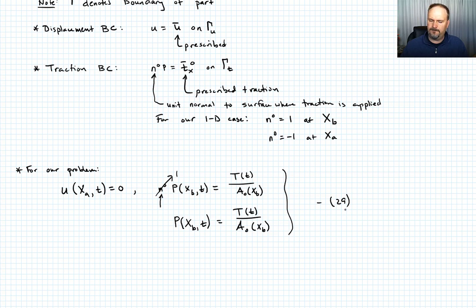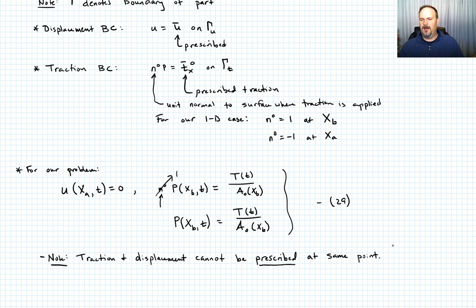Something you should note: you can either apply a traction or displacement at a point - you cannot prescribe both at the same point. That doesn't mean a point can't have both, it means you can only control one or the other. The corollary is that the total boundary is the traction boundary plus the displacement boundary.